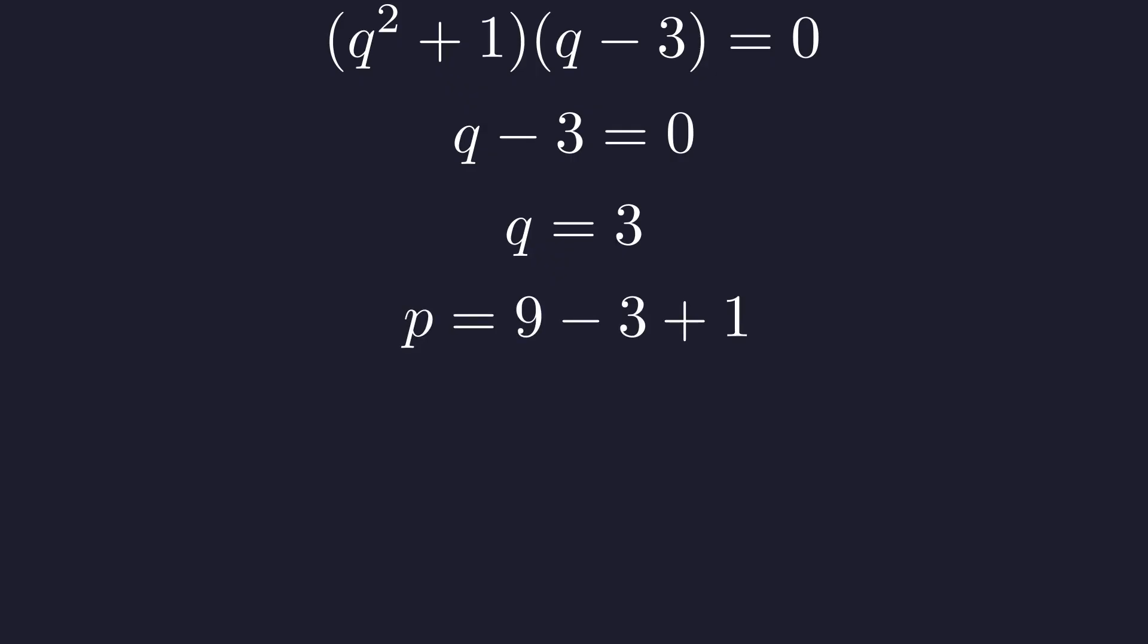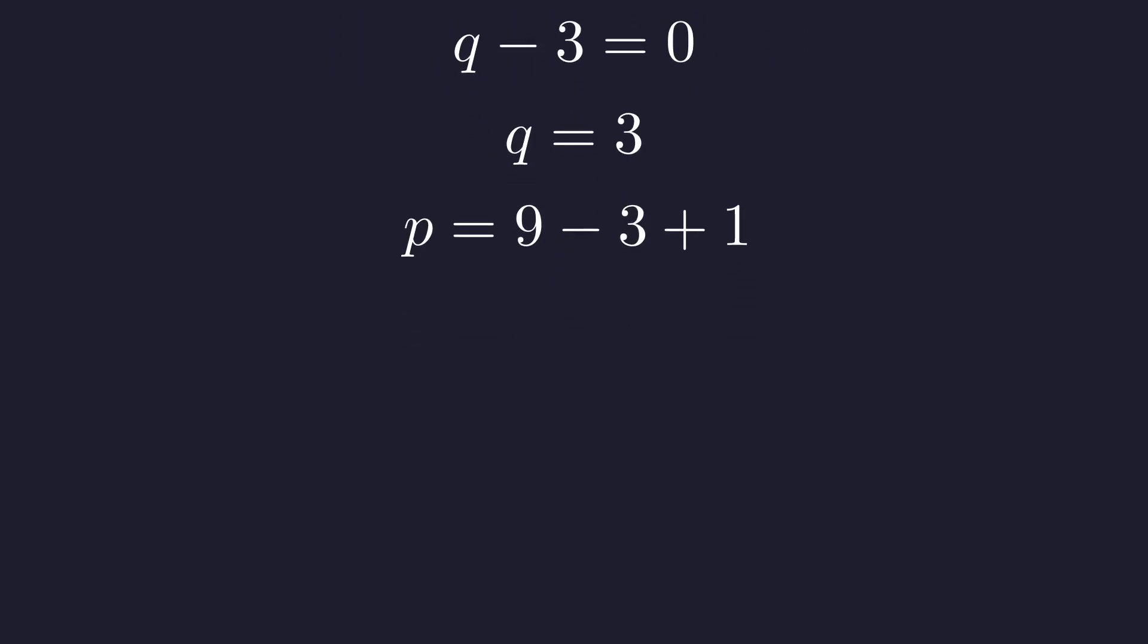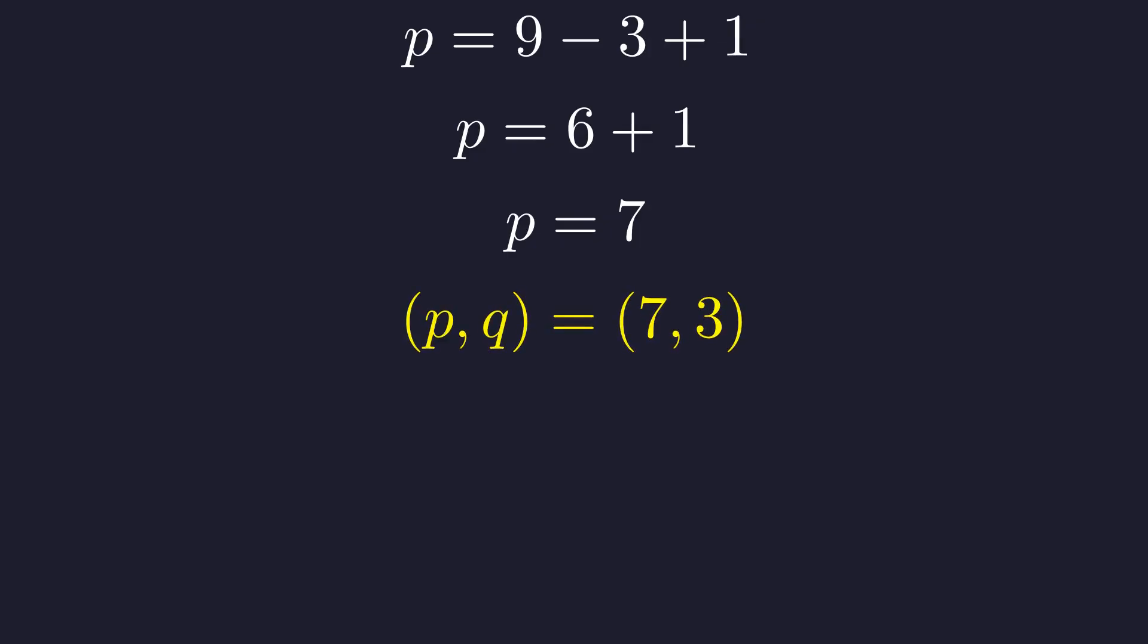Plugging in q equals 3, we first calculate that 3 squared is 9. Then, 9 minus 3 is 6. Finally, this gives p equals 7. Both 3 and 7 are prime numbers, as required. The logical deduction leads to a single solution pair, p equals 7, q equals 3.